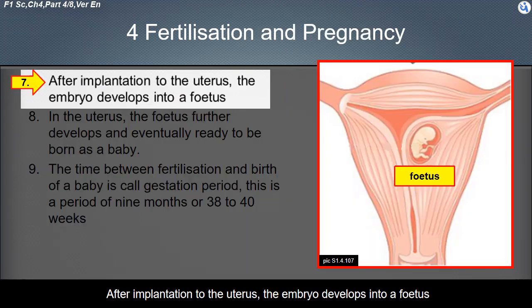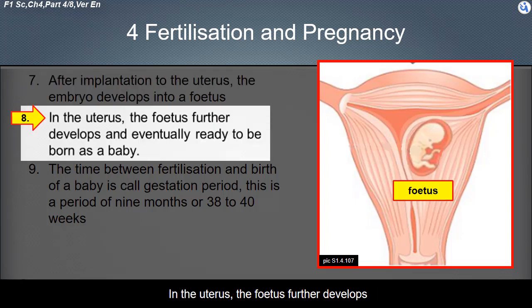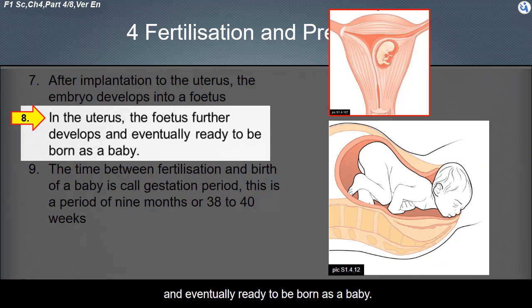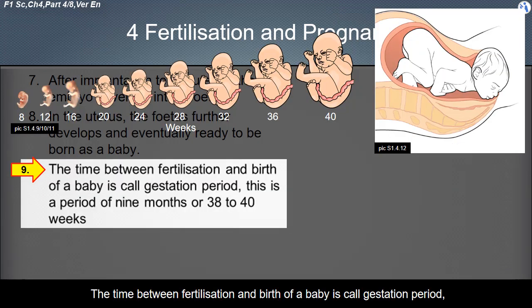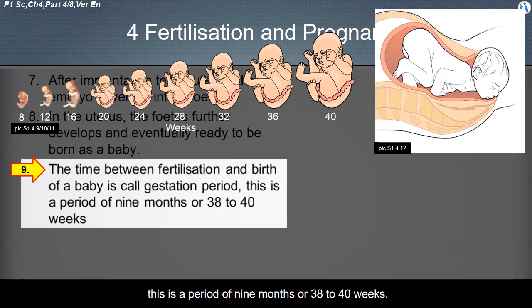After implantation to the uterus, the embryo develops into a fetus. In the uterus, the fetus further develops and eventually is ready to be born as a baby. The time between fertilization and birth of a baby is called the gestation period. This is a period of nine months, or 38 to 40 weeks.